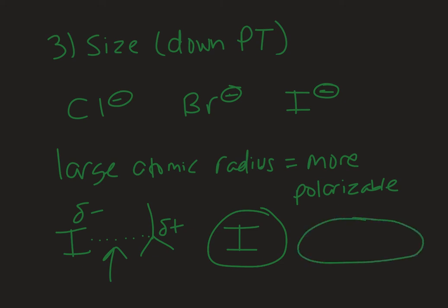And so the iodide can kind of squish out more, so you get more of a partial negative here when in the presence of this partial positive. The larger the atom, the more polarizable it is, and the further away bonding can happen, which will just stabilize that transition state.